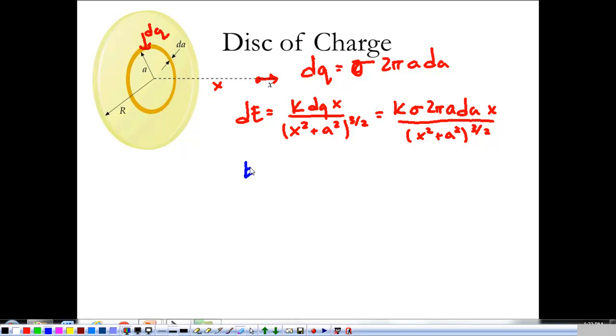Looking at this, the only thing that I'm integrating with respect to is A. So my electric field is going to be K·σ·π·X times the integral of 2A·dA over (X² + A²)^(3/2), and we're integrating from A equals 0 at the center all the way out to the edge of my disk R, from 0 to capital R.